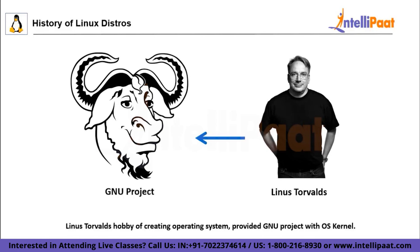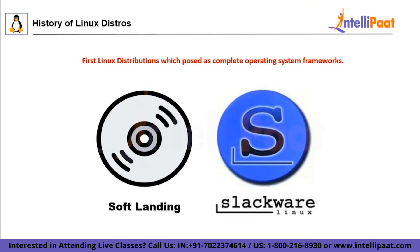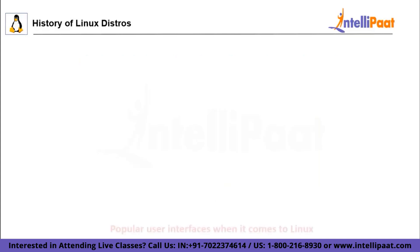Luckily, right around this time, Linus Torvalds was working on his hobby operating system. Originally, it was going to be called Free-X because the name Linux was too egotistical, but the admin kept it as-is without informing Linus Torvalds. In 1992, this OS was released under the GNU General Public License, giving birth to the complete operating system: GNU plus Linux. This ultimately led to some of the first Linux distributions like Soft Landing, Slackware, etc. These Linux distros were complete operating systems based on the Linux kernel, containing a bunch of packages and libraries, and typically a package manager to install additional applications and possibly a window system if a GUI was involved.